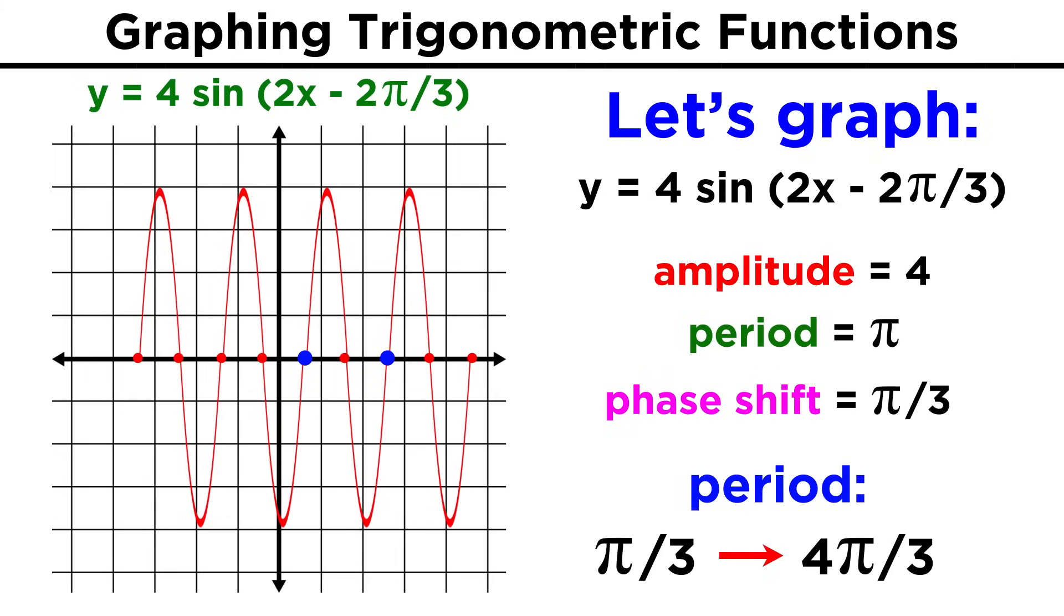So the period will start at one third pi and end at four thirds pi, going up to four, and then down to negative four, before coming back to zero.